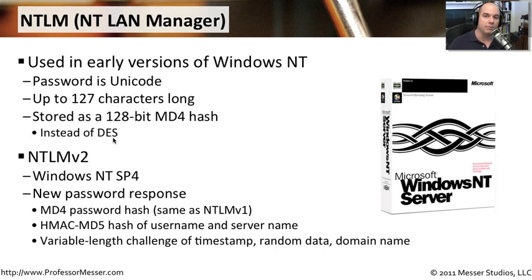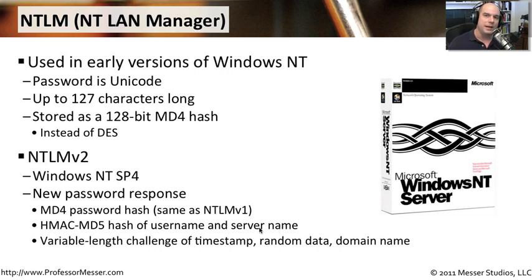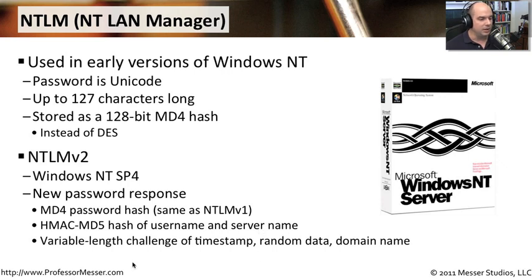Even that wasn't good enough, so NTLM version 2 came out with Windows NT Service Pack 4, adding additional security. There was a new password response using an MD4 password hash — same as NTLM version 1 — but now combined with a hash of the username and server name as well. This means it's not going to look exactly the same every time; some things will be randomized when the information is hashed and sent across the network. There's also a variable-length challenge that includes a timestamp, some random data, domain name information, and more details to make the authentication conversation more secure.